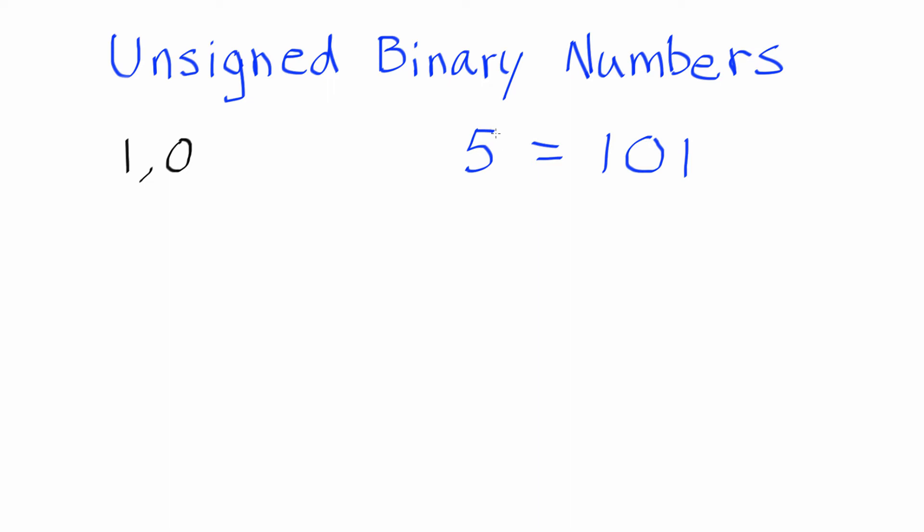If this is unsigned binary, then this actually represents the number that we're used to seeing as 5. So 5 would be base 10, that's the numbers we're used to. But we need to be able to represent the 5 as an unsigned binary number. So we can only use 0 and 1 to accomplish this. How do we get from 1, 0, 1 to the number 5?